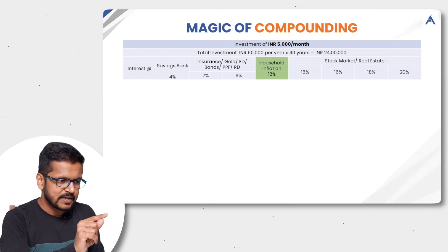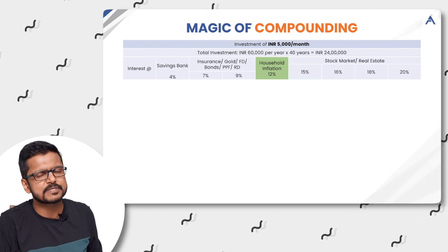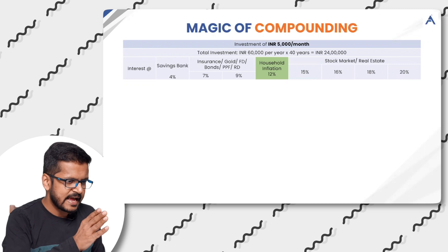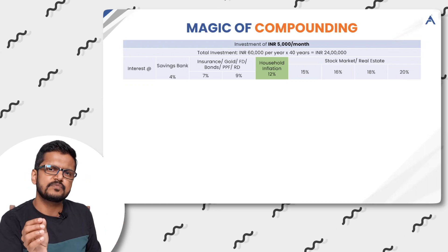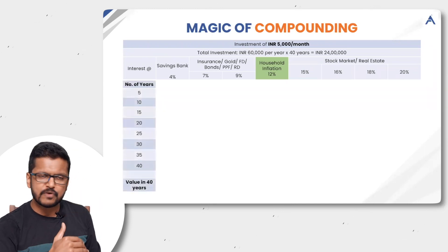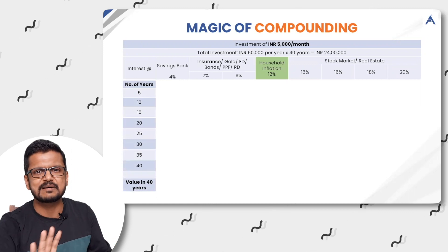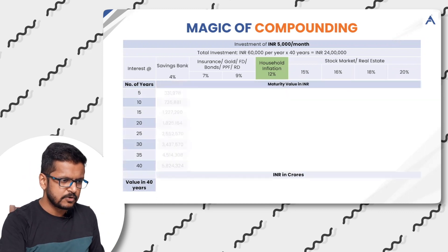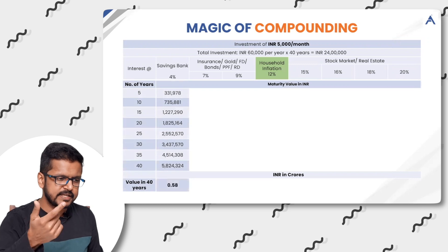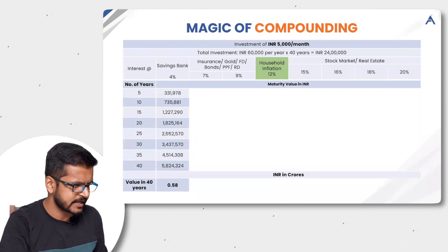Household inflation we've taken at 12%. Why? Because only when you earn 12% and after paying taxes you get a bare minimum of 10% — which is the bare minimum inflation any household has witnessed in the last 40 years. Now, if you invest 5,000 rupees per month at 4% per annum, after 40 years your 24 lakhs of investment will become 58 lakhs. At 7% returns, your final amount will be 1.24 crores. In case of 9%, it will be 2.12 crores.